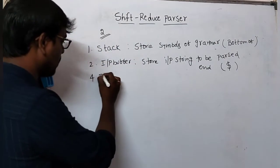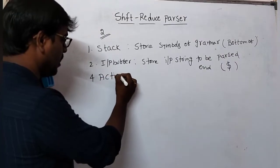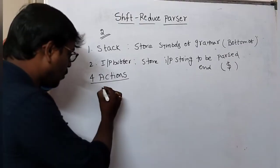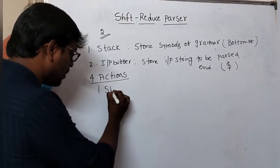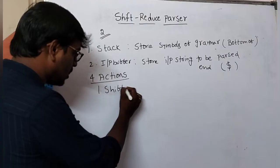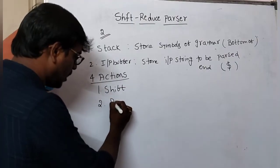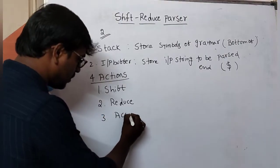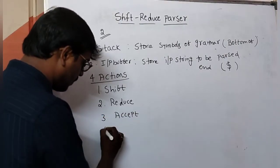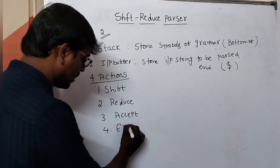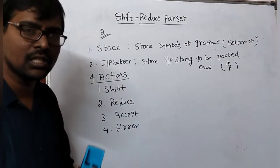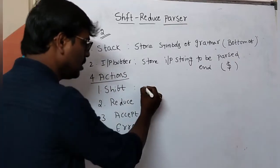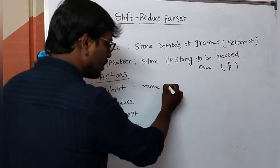In a shift-reduce parser, four actions are performed. The four actions are: first, the shift action; second, reduce; third, accept; and the fourth one is error. These are the possible actions.